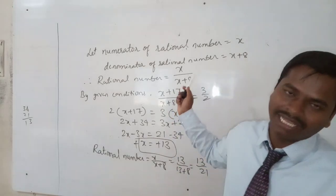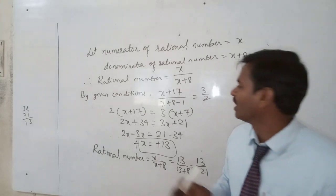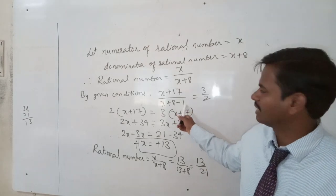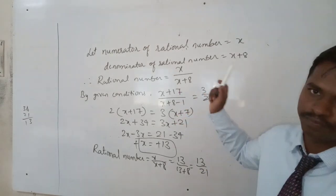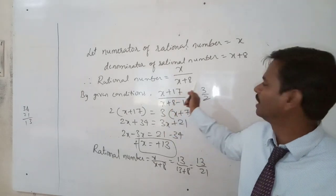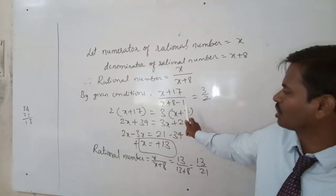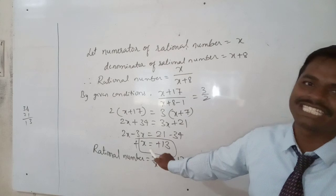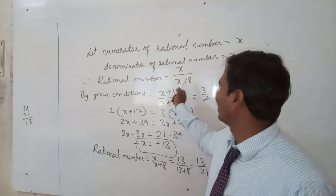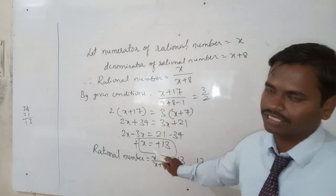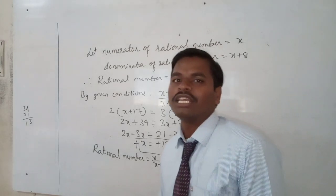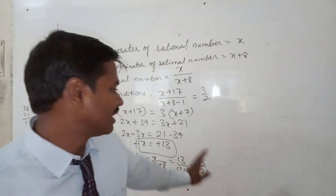If numerator is increased by 17 — increase means plus — we add 17, so it becomes x plus 17. Denominator decreased by 1 means minus 1. Then its value becomes 3 by 2. We cross multiply and simplify this equation, getting x equal to 13. Therefore the required rational number is 13 by 21.